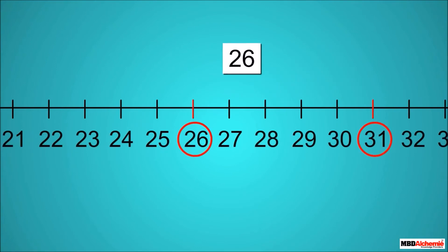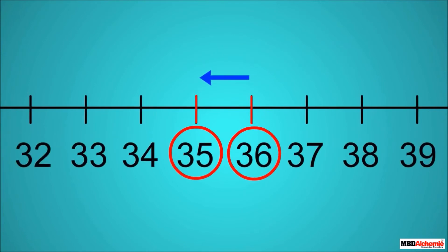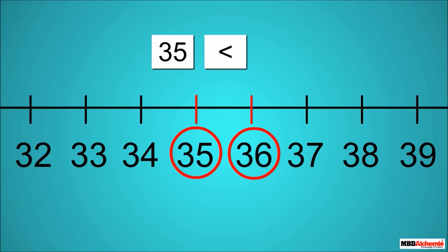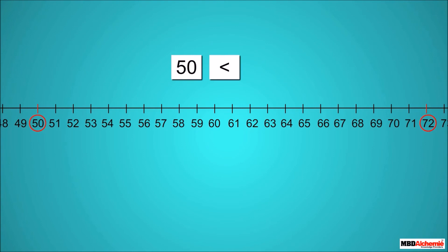Let us see a few more examples. 26 lies on the left of 31, which means 26 is a smaller number and 31 is a bigger number. 35 lies on the left of 32, which means 35 is a smaller number and 32 is a bigger number. 50 lies on the left of 72, which means 50 is a smaller number and 72 is a bigger number.